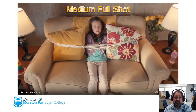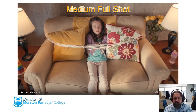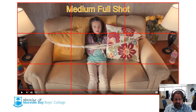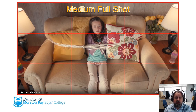Here you can see we have a medium full shot — we can almost see all of the child, from head down to about the knees. If we also look here, we can see that her head, which is the subject, is along that top line of thirds.